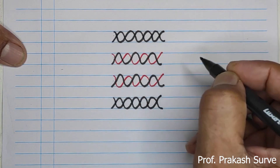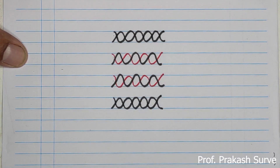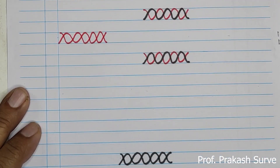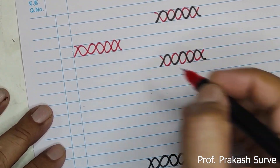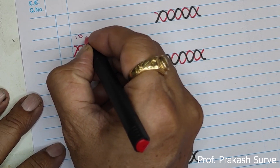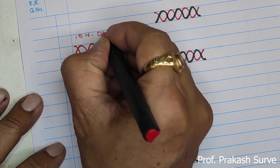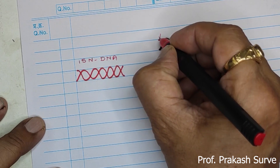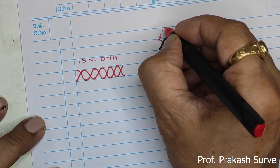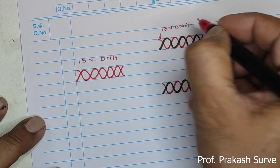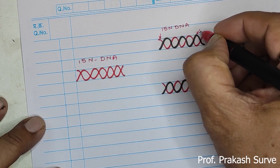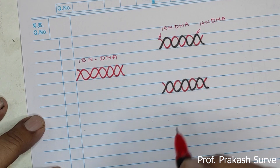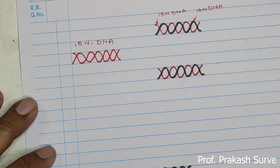Same way here also. Now what we got in Generation 2, which is after 40 minutes — first one is of the 15N DNA, this red color strand is of the 15N DNA, and the black color which is of the 14N DNA. Same way here also.